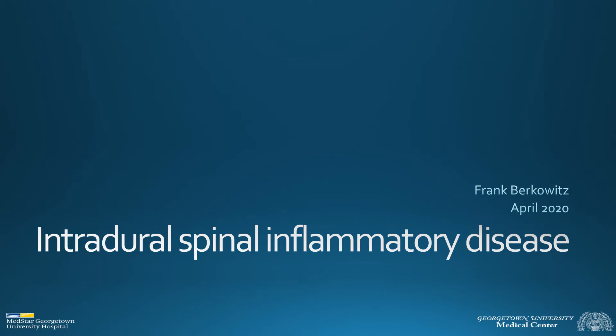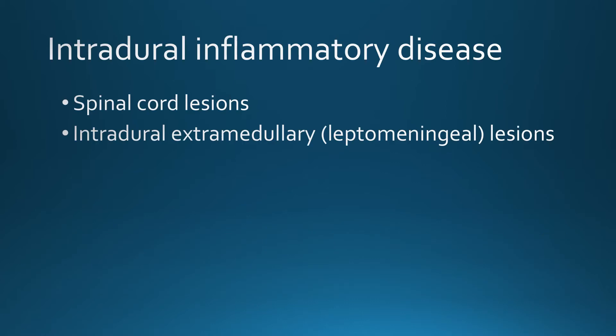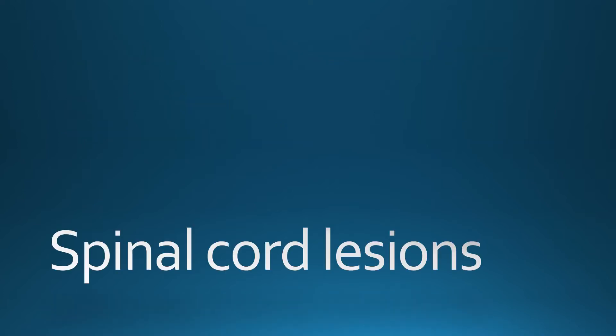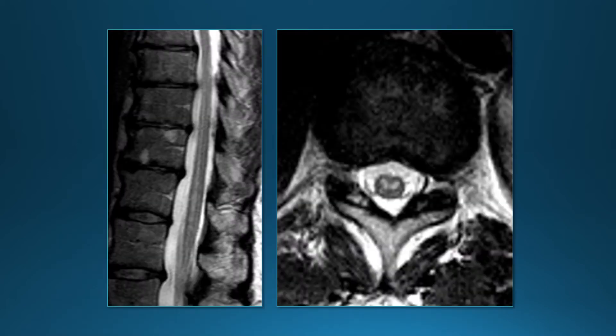This presentation covers intradural spinal inflammatory disease. We'll initially talk about spinal cord lesions — intramedullary lesions — and then intradural extramedullary or leptomeningeal lesions. First, for the spinal cord lesions, here are a few examples to review the spinal cord anatomy.